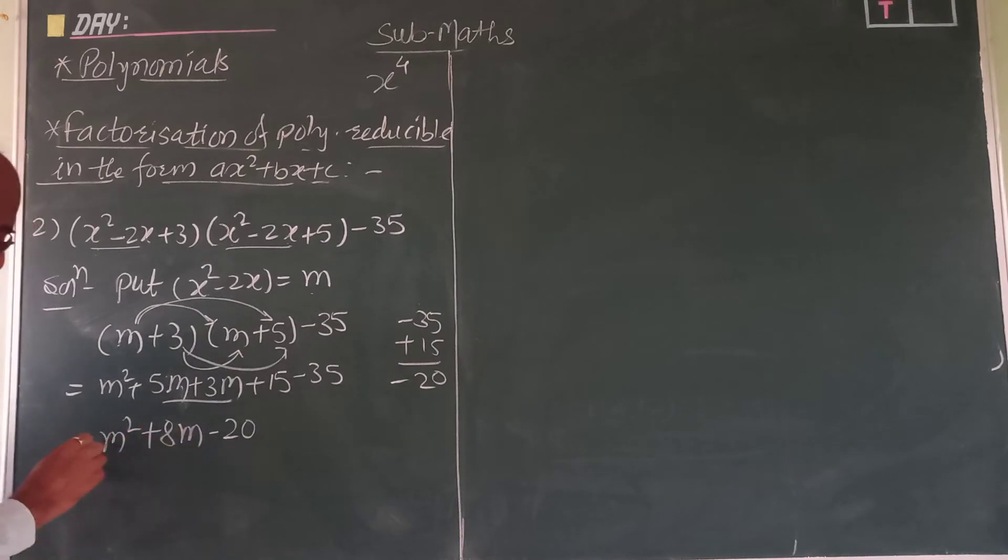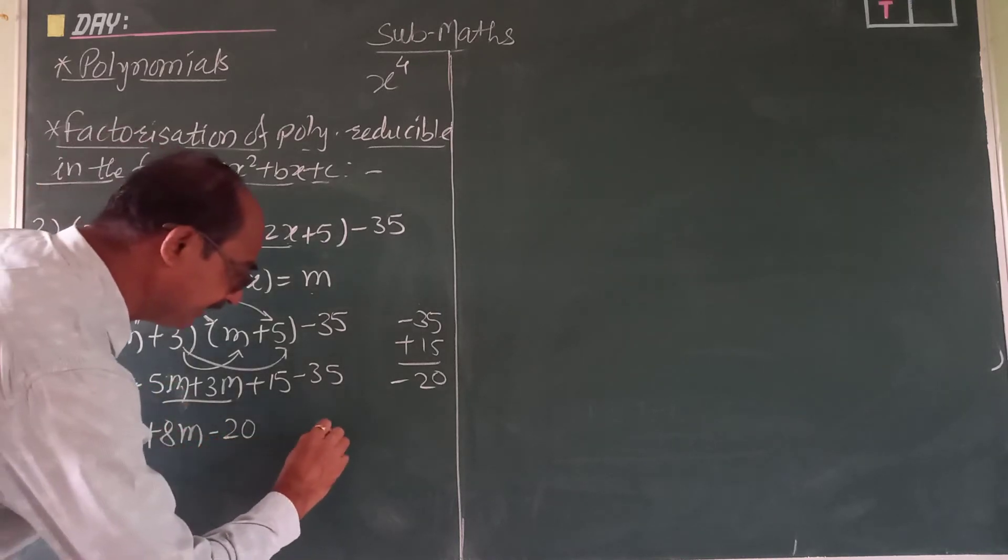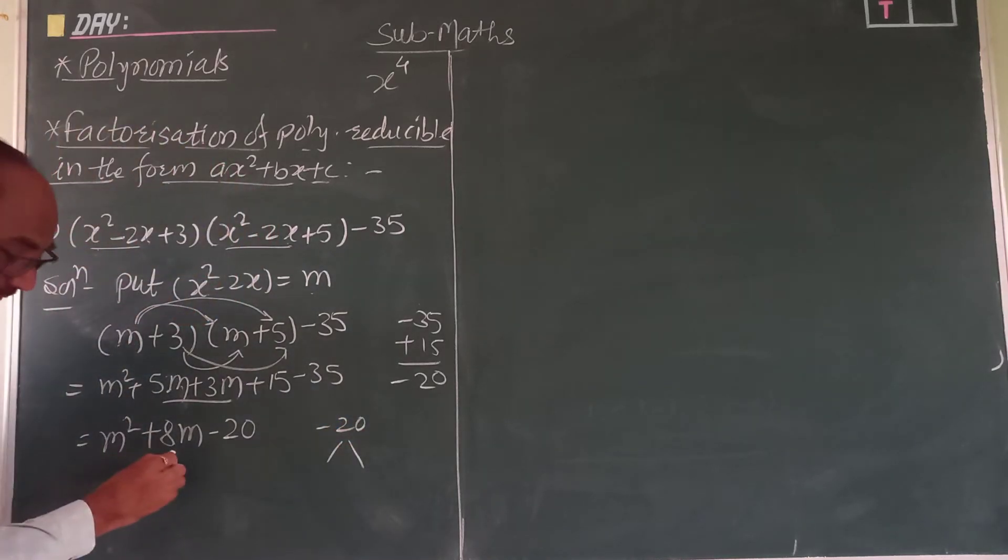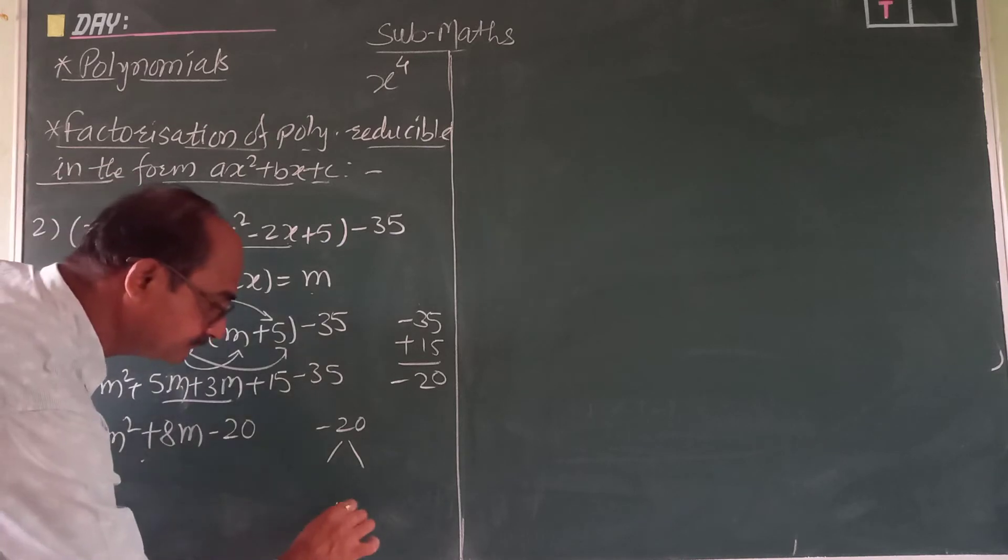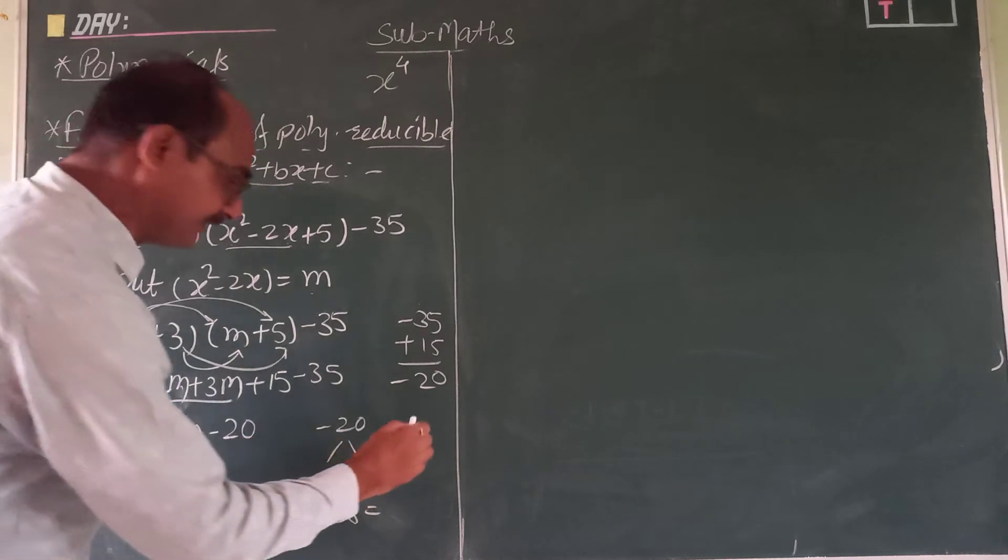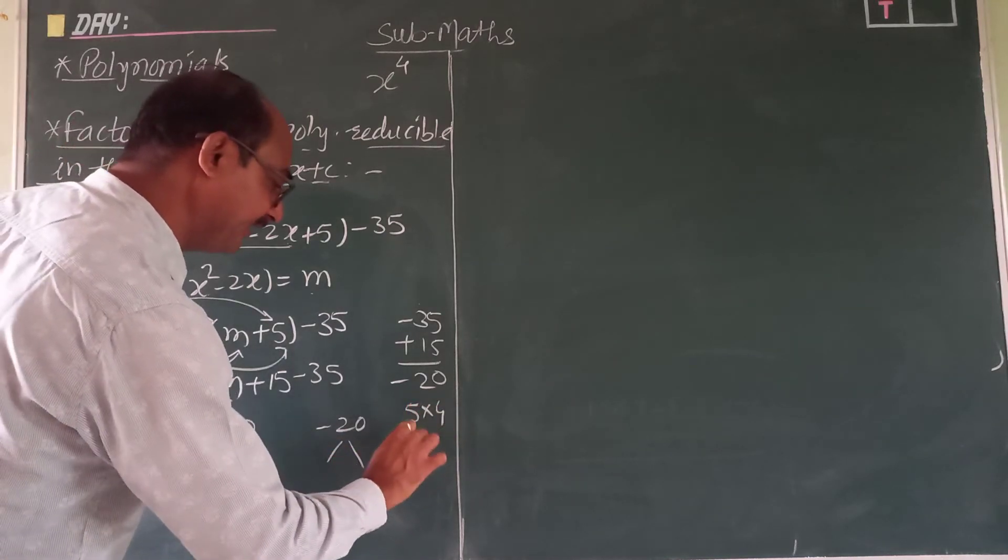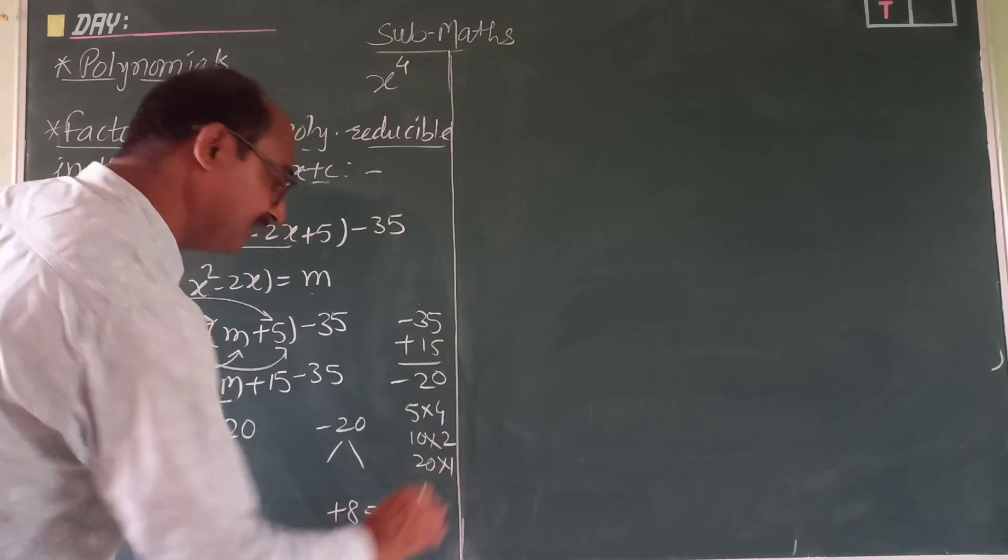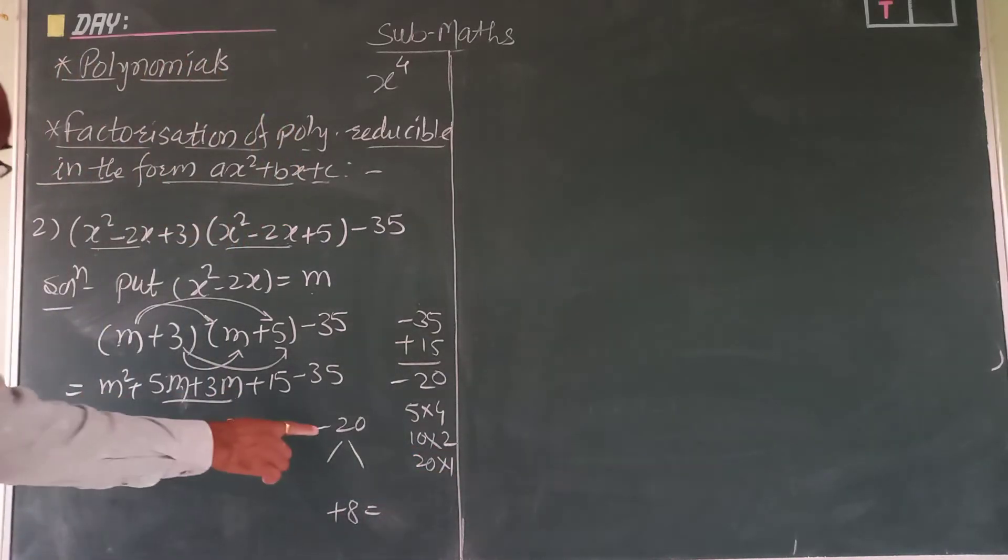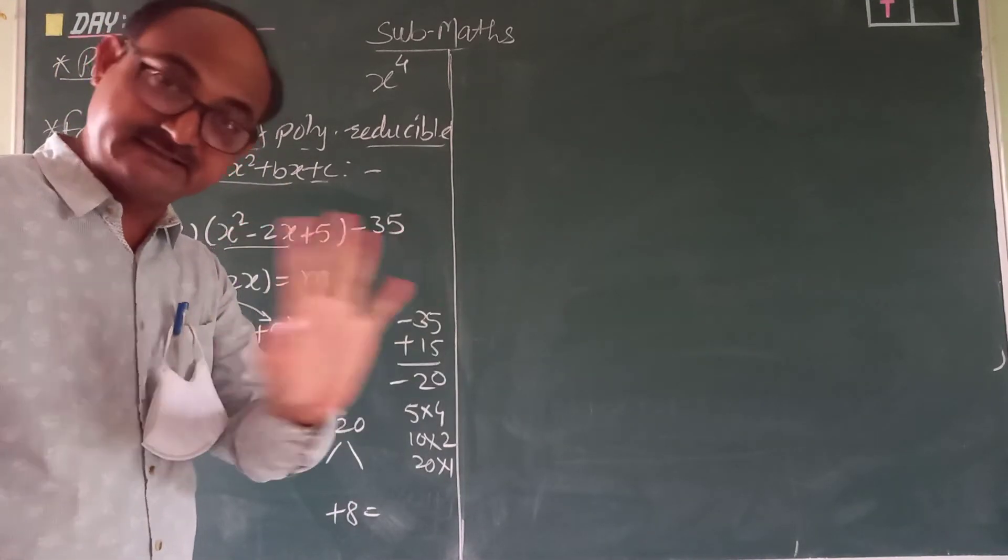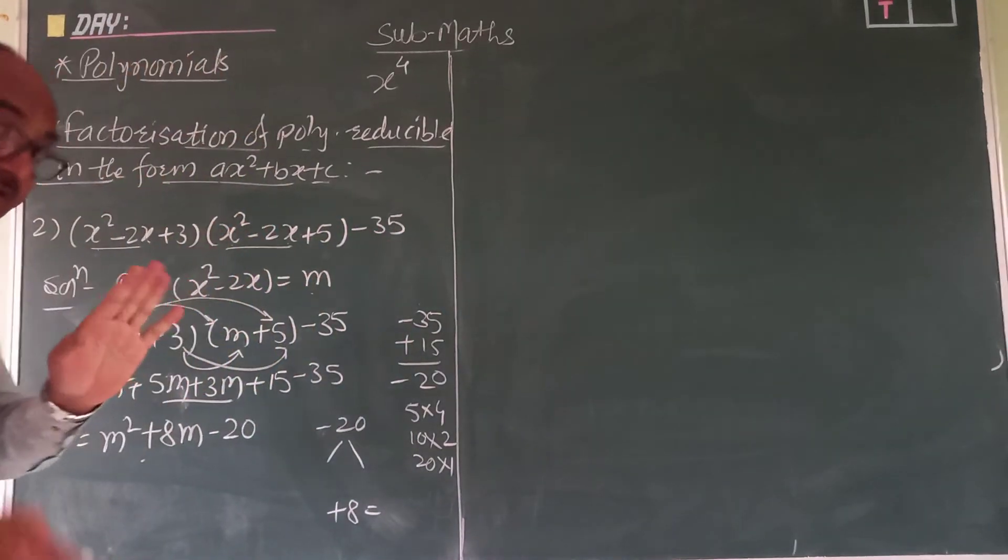So now this point of m come. This one you have to factor. See here, coefficient is 1, 1 multiplied by minus 20, product is minus 20. Two factors you have to find and sum should be plus 8. Every time you have to write near to them. So many factors: 5, 4, that may be 10, 2, 20, 1.